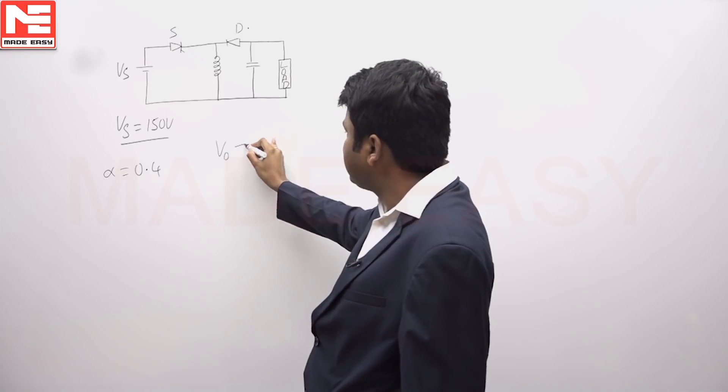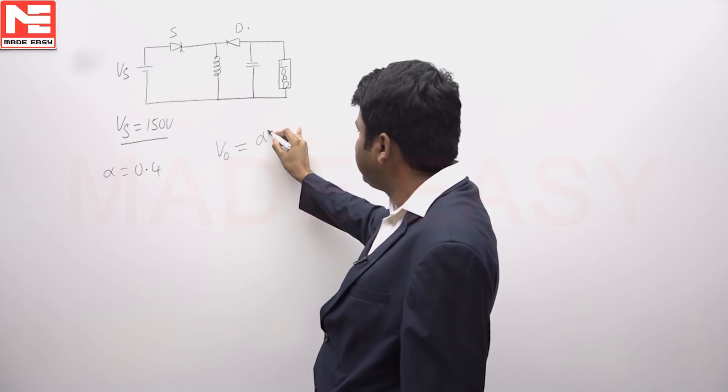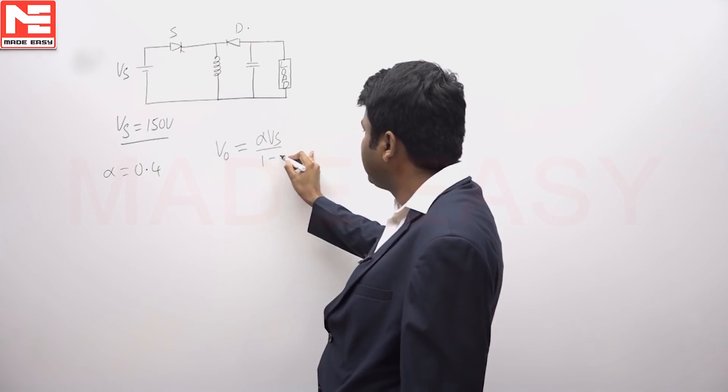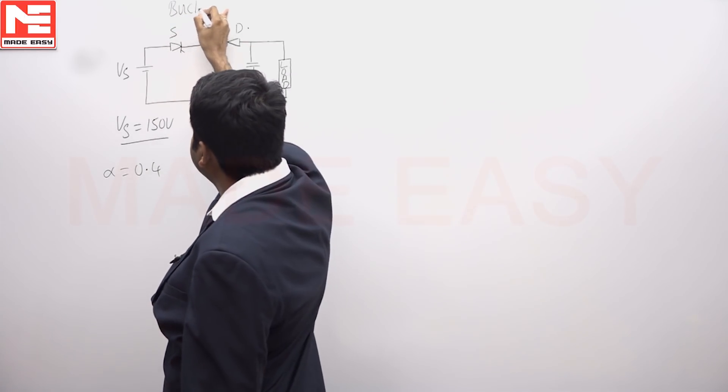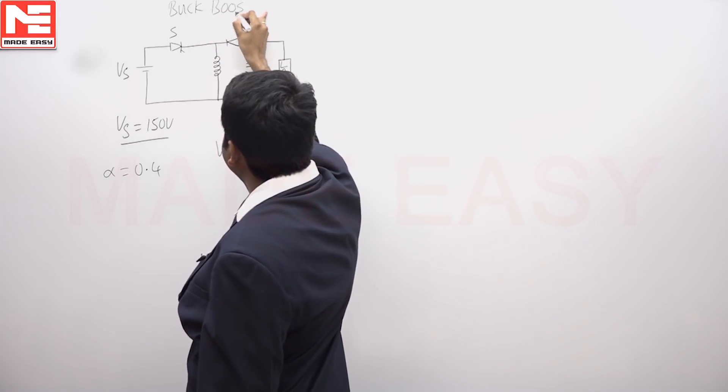Formula for average output voltage of a buck-boost converter is alpha into Vs by 1 minus alpha. It is buck-boost converter.